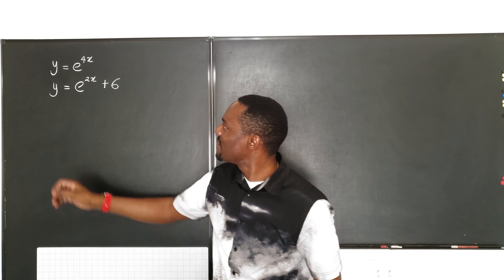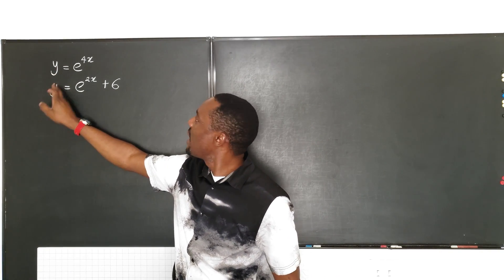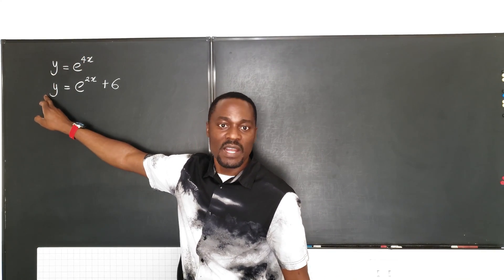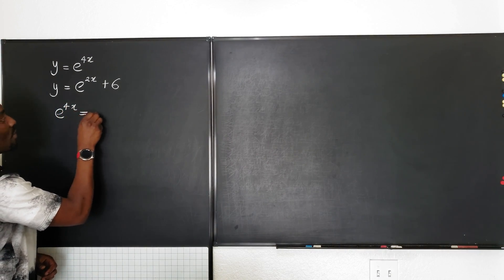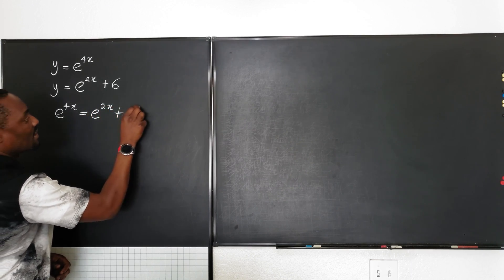Well, that looks very easy because instead of me writing y in the second equation, I can just replace it with e to the 4x and write it here. So I'm going to end up with this equation: e to the 4x is equal to e to the 2x plus 6.